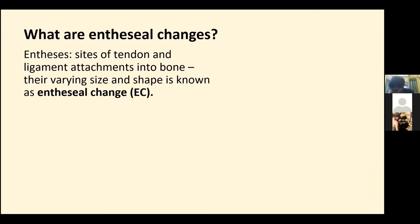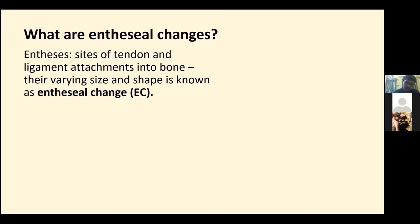Enthesial changes have been previously known by other names, such as musculoskeletal stress markers, coined by Horky and Mervs in 1995, and they've also been known as enthesisopathies, for example in Alves Cardoso and Henderson 2010. The term enthesial changes is used here following Jermaine and Villotte 2010, in that it is more neutral and doesn't suggest a particular cause behind the changes.